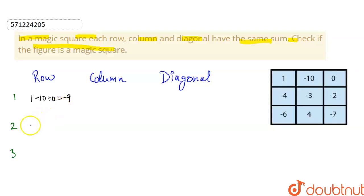And sum for second row is minus 4 minus 3 minus 2, that is also minus 9. And sum for row 3 is minus 6 plus 4 minus 7, this is also minus 9.